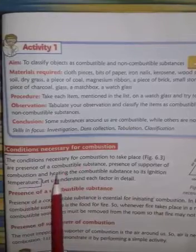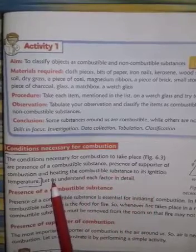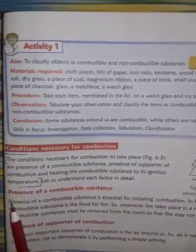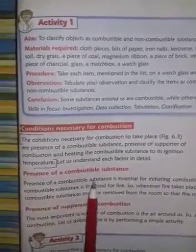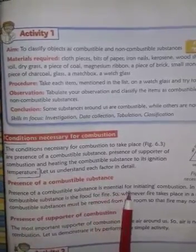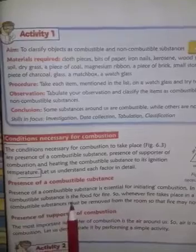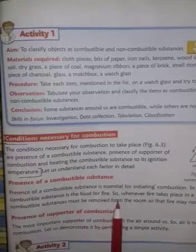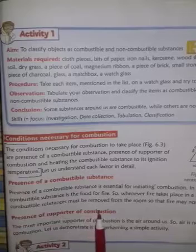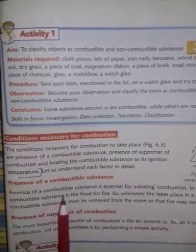First condition: Presence of Combustible Substances. Presence of combustible substances is essential for initiating combustion. In fact, combustible substance is the food for fire. So, whenever fire takes place in a room, all the combustible substances must be removed from the room so that fire may not spread further.